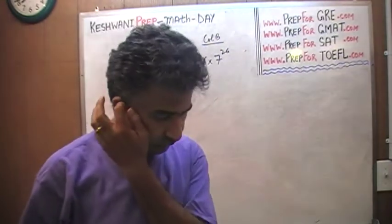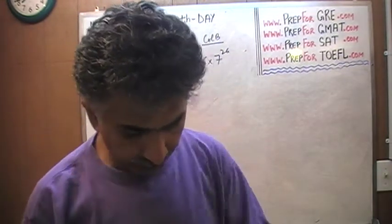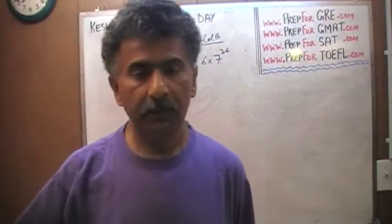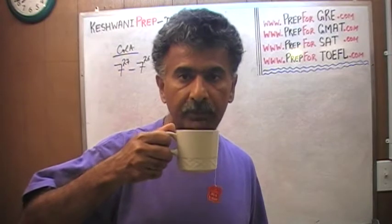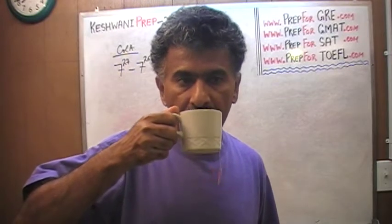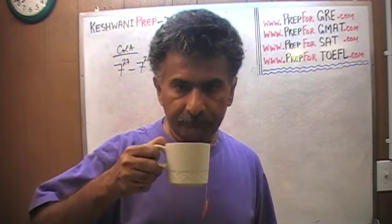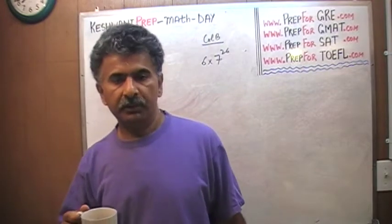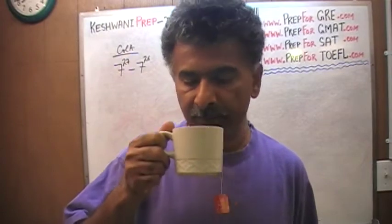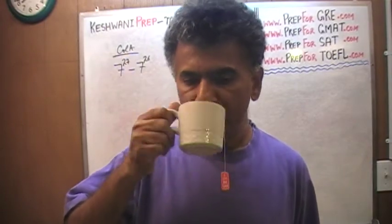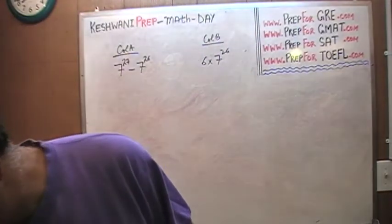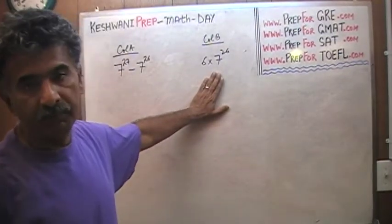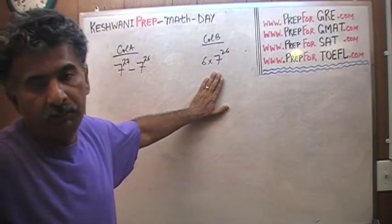How do we figure out which column is bigger? If column A is bigger, the answer is A. If column B is bigger, the answer is B. If the two columns are equal, the answer is C. And if it cannot be determined which column is bigger, the answer is D. But that does not apply here, because we have numerical quantities in both columns — there has to be an answer.